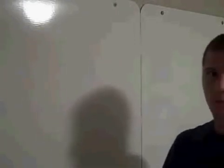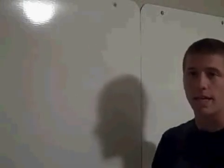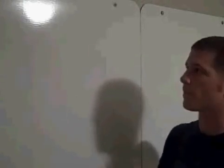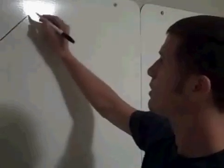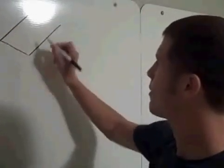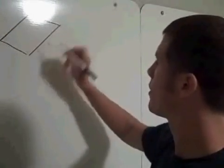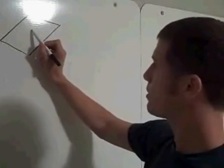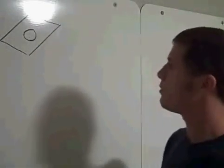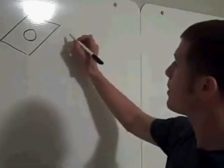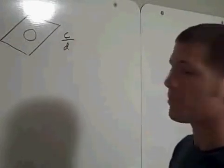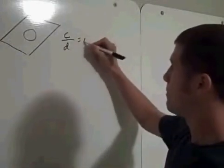Most of us are familiar with pi in the plane because we study Euclidean geometry in high school. As a refresher: on a plane, for any circle, the circumference of that circle divided by its diameter is equal to pi.